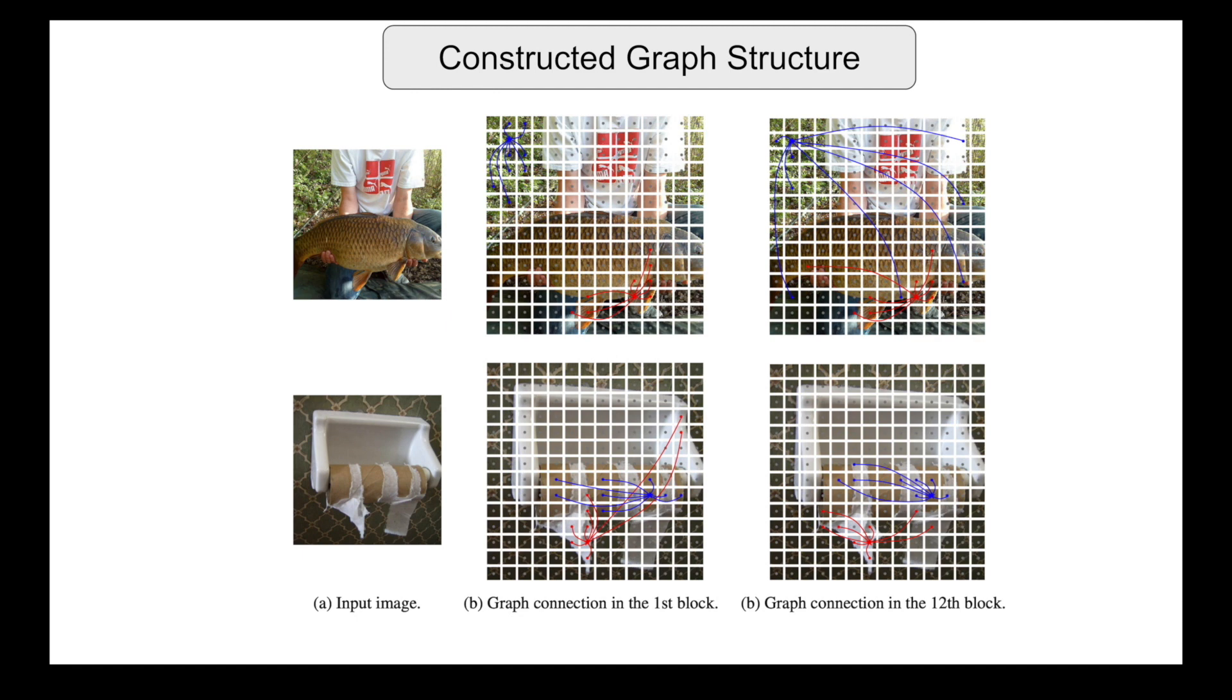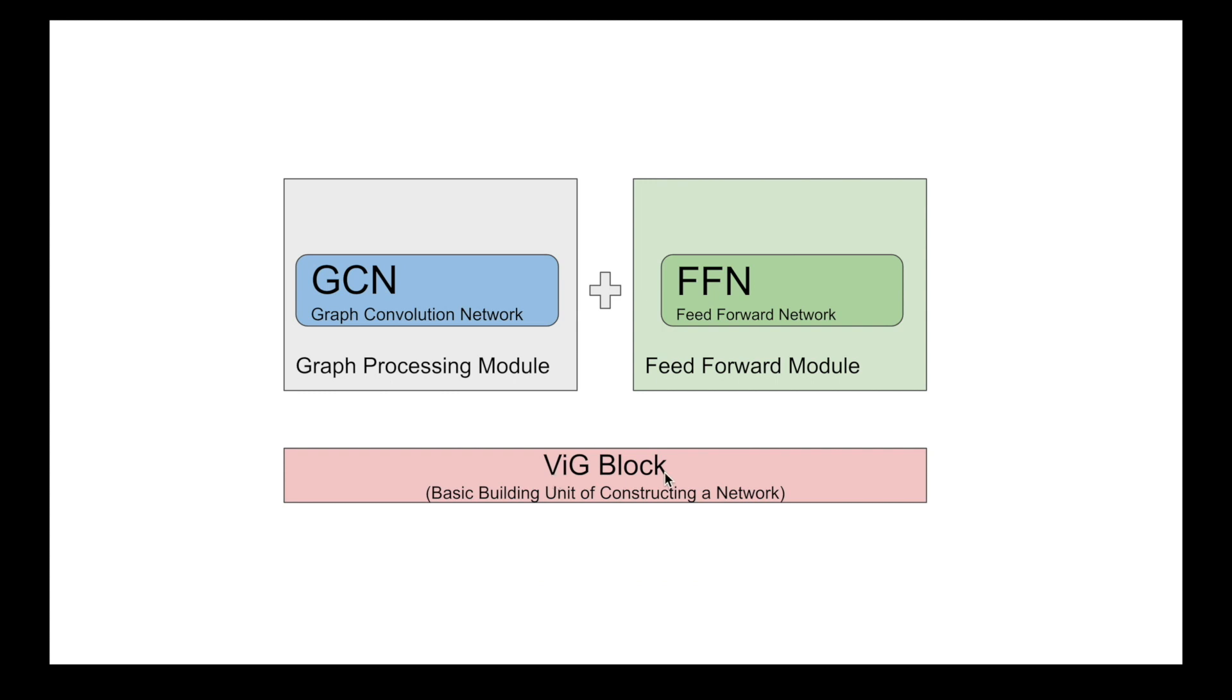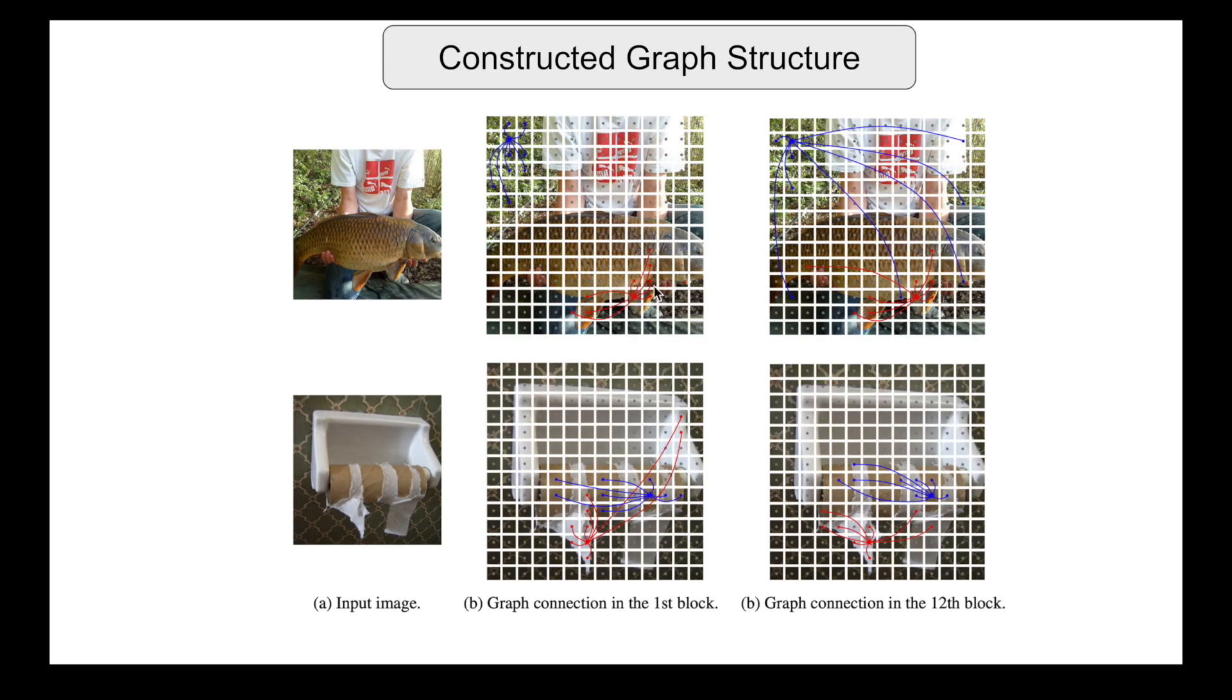And here we could understand how the final constructed graph structure looks like. Here the input image, as you see this is in the very first block and this is after the 12th block. So what are the blocks? So we have already seen the VIG block. It means the graph processing and the combination of per node feed forward network generate one block. So after 12 blocks, the input image which was at block number one has the graph which looks like this after the 12th block.